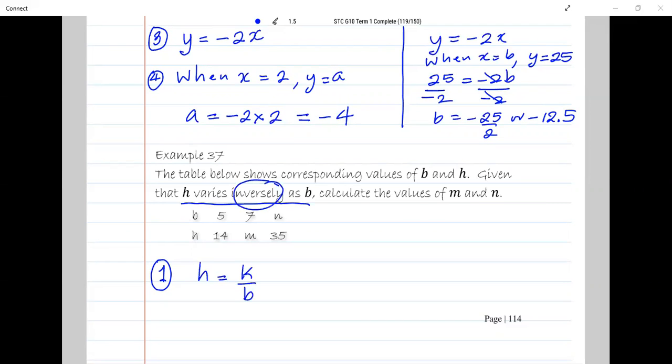Where K is the constant of proportionality, or the proportionality constant, or the variation constant. The two variables are H and B. If the word used was directly, it would be K multiplied by. If the word used is inversely, it is K divided by. That is step one.